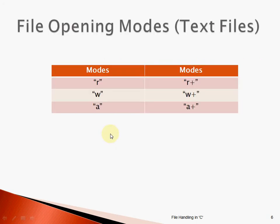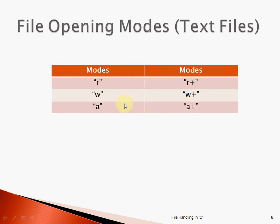Next we will see the different modes for opening text files. There are six modes: read mode (R), write mode (W), and append mode (A), along with R plus, W plus, and A plus. I will explain all of these modes on the next slide.